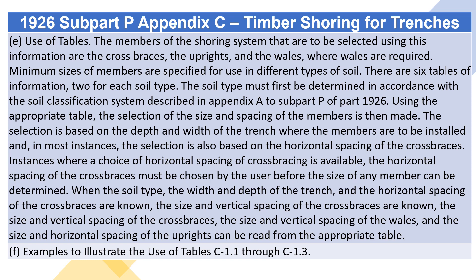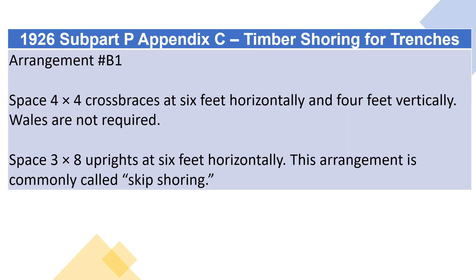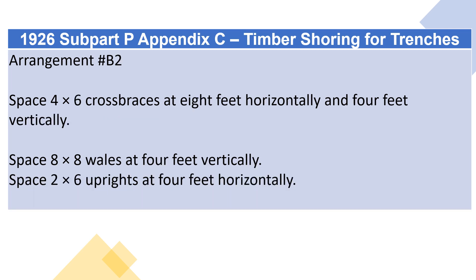F. Examples to illustrate the use of Tables C1.1 through C1.3. Example 1: A trench dug in Type A soil is 13 feet deep and 5 feet wide. From Table C1.1, four acceptable arrangements of timber can be used. Arrangement B1: space 4×4 crossbraces at 6 feet horizontally and 4 feet vertically. Whales are not required. Space 3×8 uprights at 6 feet horizontally. This arrangement is commonly called skip-shoring. Arrangement B2: space 4×6 crossbraces at 8 feet horizontally and 4 feet vertically. Space 8×8 whales at 4 feet vertically. Space 2×6 uprights at 4 feet horizontally.